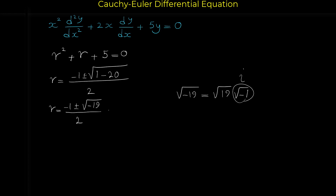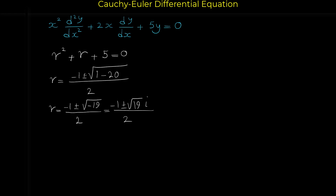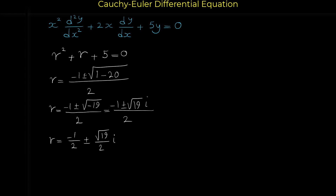This gives r equals negative 1 plus or minus square root of negative 19 over 2. The square root of negative one is i, so this equals negative 1 plus or minus square root of 19 times i, all over 2. Therefore r equals negative one half plus or minus (square root of 19 over 2) i, so alpha equals negative one half and beta equals square root of 19 over 2.